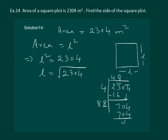And hence length is equal to square root of 2304, which is equal to 48 meters.